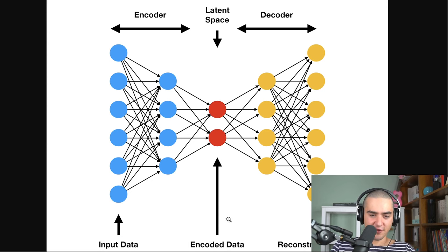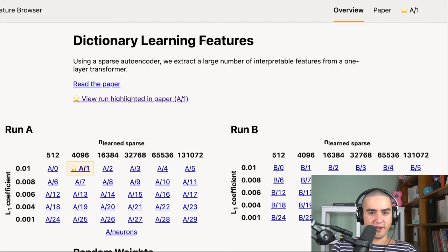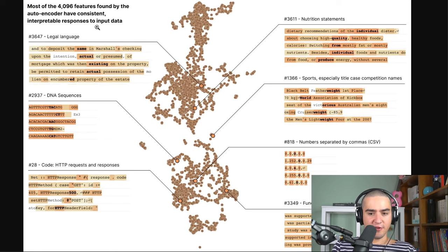Like imagine you have like 4,000 features here. So it's basically having 4,000 words where this kind of way of looking at the data, makes sure you can regenerate the rest of the data, right? So the concepts or the thing that these features encode is like what they find in the paper. So those features, for instance, are stuff like legal language, DNA sequences, nutrition, sports, things like that.